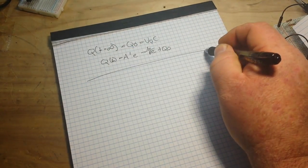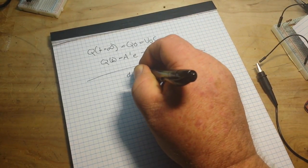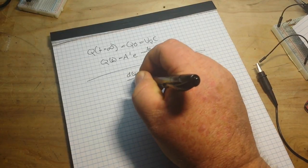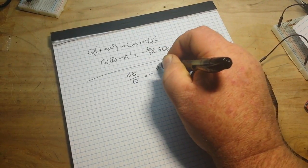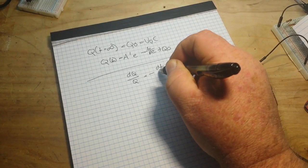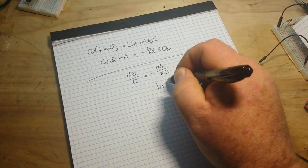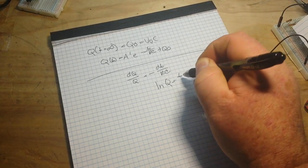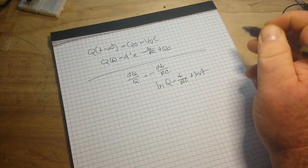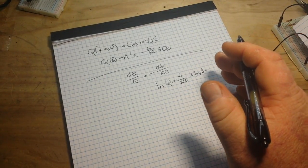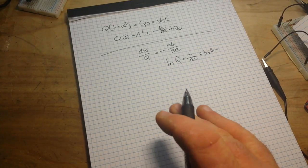Now, on the discharge side, we can again use integration and say DQ over Q is equal to minus DT over RC or the LN of Q equals T over RC plus LNA. Okay? So you guys wanted to get into the calculus, we're getting into it now.